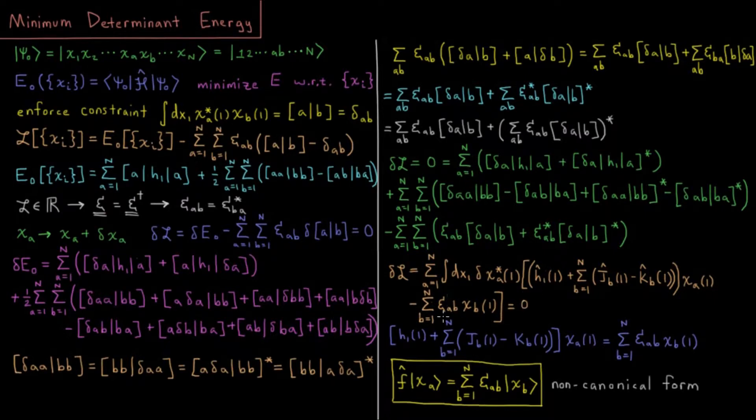Or similarly, if I take this term, which is negative, and move it to the other side, that means this term has to equal that term. I have h1 plus the sum over all spin orbitals of Coulomb minus exchange operator acting on chi a. That has to equal a sum from b equals one to n of the Lagrange multiplier epsilon ab acting on orbital b. If you've been paying attention, this is actually the Fock operator. This is the Fock operator for electron one acting on spin orbital a. So I might indicate F chi a there. This equals the sum from b equals one to n, epsilon ab chi b. This is the non-canonical form of the Hartree-Fock equations.